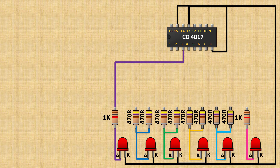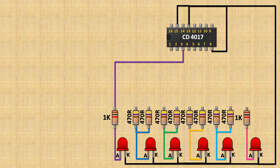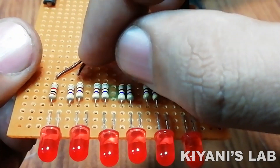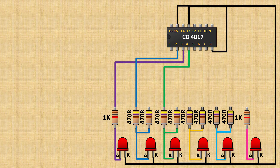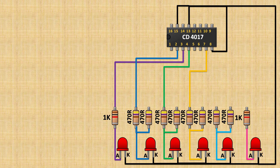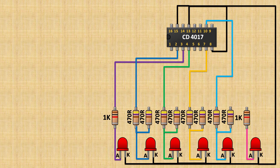Now connect the remaining pin of the resistor connected with the first LED to pin number 3 of the IC. Connect the second LED's resistor to pin number 2, the third LED's resistor to pin number 4, the fourth LED's resistor to pin number 7, and the fifth LED's resistor to pin number 10 of the IC.